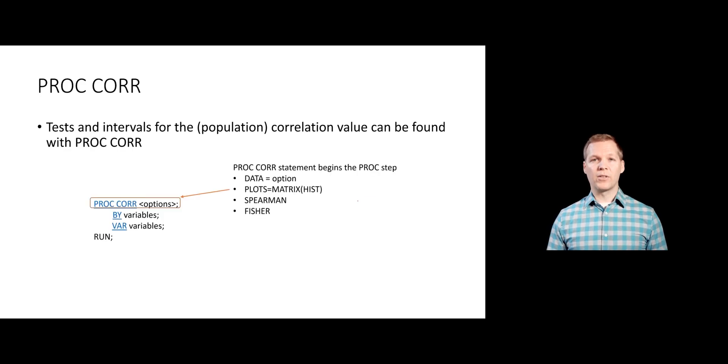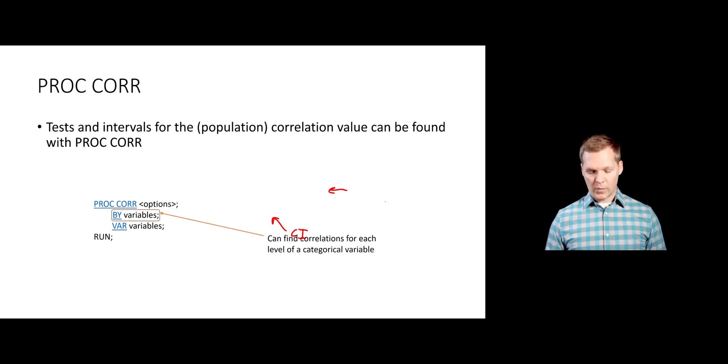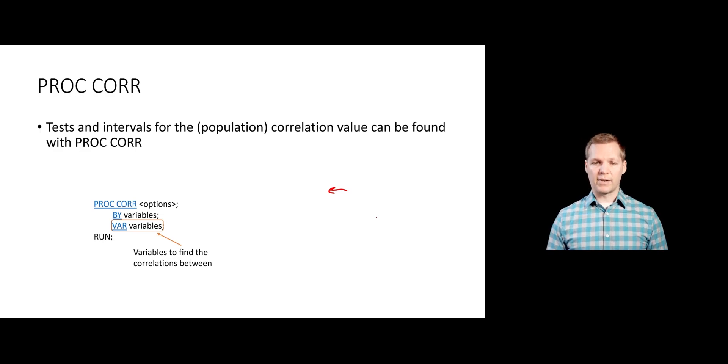With PROC CORR, we've already looked at the statements associated with it. One commonly used option that will automatically create some nice plots for us is after the PROC CORR statement, we specify which dataset we want, we can do plots equals matrix hist. This gives us a matrix of scatter plots, as well as a histogram down the diagonal. If we want confidence intervals for our correlation coefficients, we can use the Fisher statement. We also have the BY statement, which we can use to find correlations at each level of a categorical variable. Then we specify which variables we want to find the correlations between with the VAR statement.